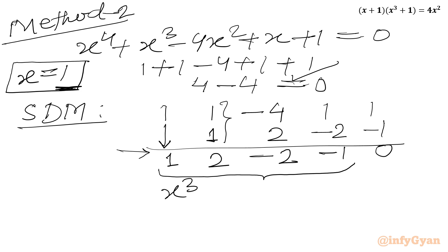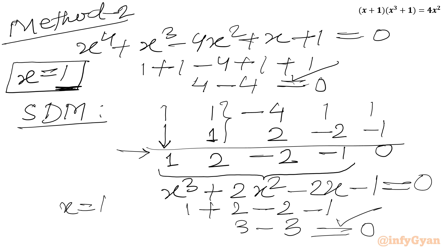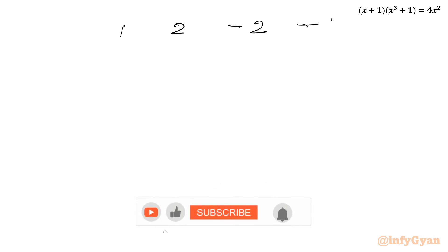So I can write x³ + 2x² - 2x - 1 = 0. Again I will plug in x = 1: 1 + 2 - 2 - 1 = 3 - 3 = 0. So x = 1 is again a root of this cubic equation. I will again use synthetic division. The coefficients of the cubic equation are 1, 2, -2, -1, and the base solution is x = 1.